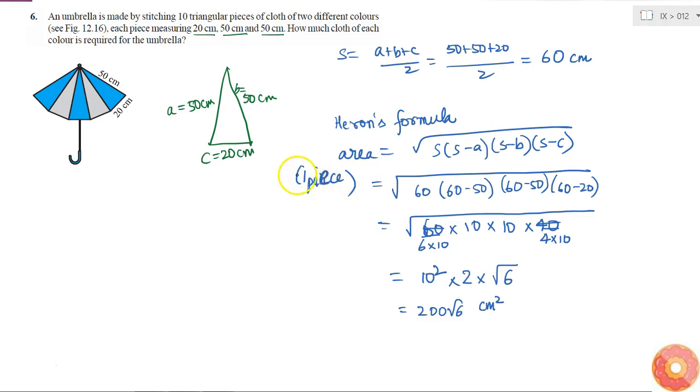This is the area of one piece of cloth. So what it is told to me, there are 10 triangular pieces of two different colors. That means that 5 are of one color and 5 are of another color.